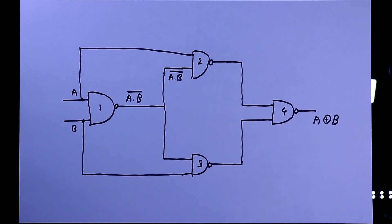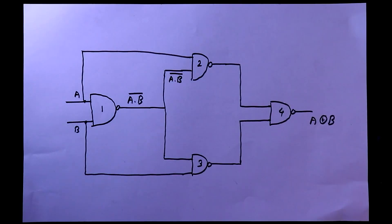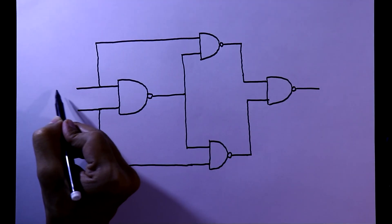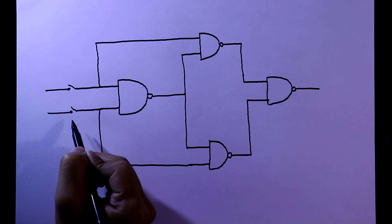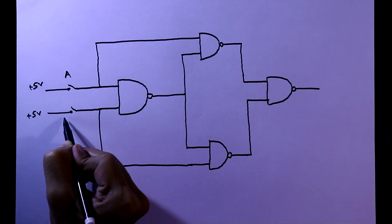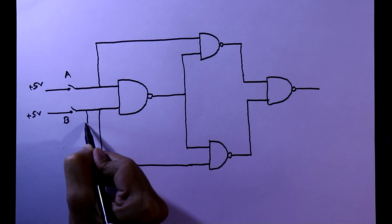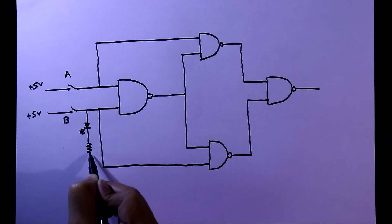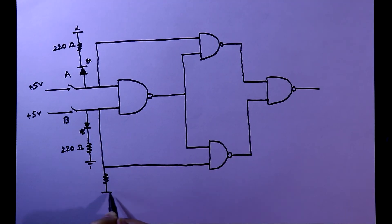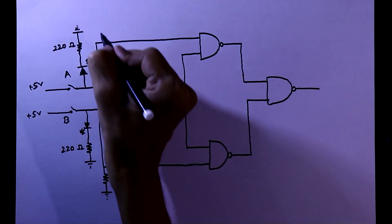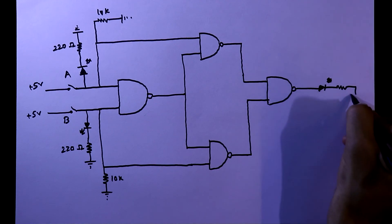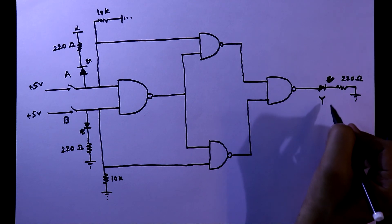Now we will see the practical circuit on the breadboard. We'll draw the basic circuit and add components. Input is provided via push button switches — one side connected to +5V. Switch A provides input A, switch B provides input B. To see the inputs we connect LEDs with 220 ohm resistors, and pull-down resistors of 10K ohms are connected to each input. An LED is also connected at the output Y.